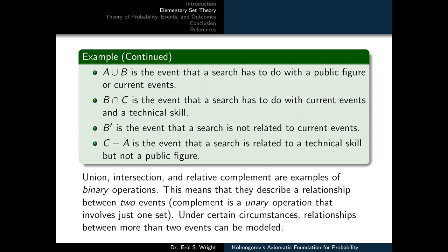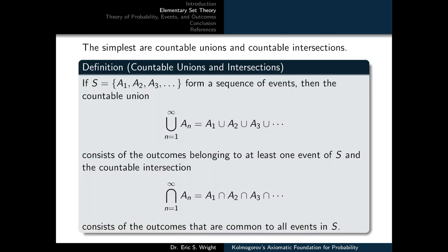Under certain circumstances, relationships between more than two events can be modeled. The simplest are countable unions and countable intersections. If we have a sequence of events S = A1, A2, A3, and so on, the countable union is the union of all those sets together — it consists of all outcomes belonging to at least one event in the sequence. Similarly, the countable intersection consists of outcomes belonging to each and every event in the sequence.